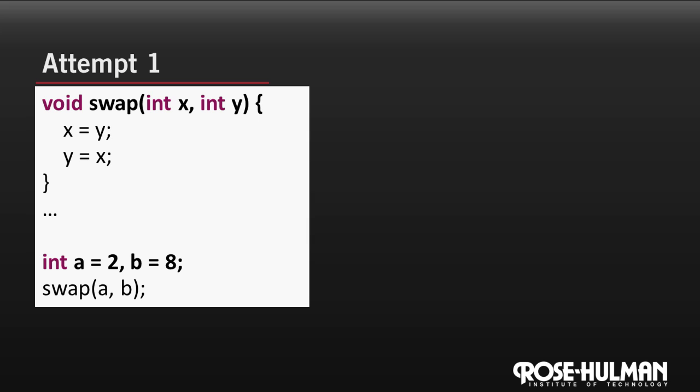Here's our first attempt. Notice that we have a swap function, and then below it some code that calls it. So let's draw the box and pointer diagram. We see that a has a value of two, b has a value of eight. And then we're passing a and b as arguments up to the swap function. So their values are going to be copied up into the parameters x and y. Two and eight.